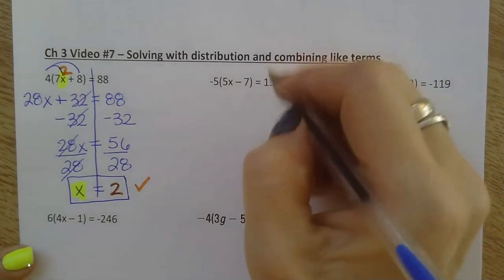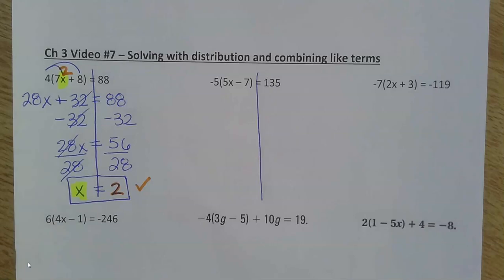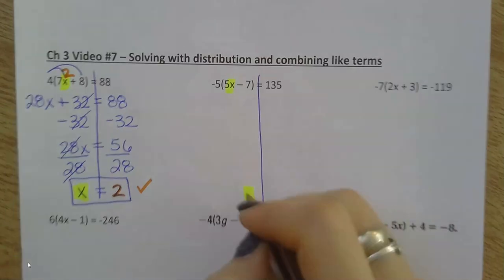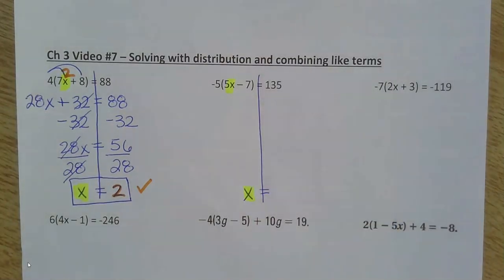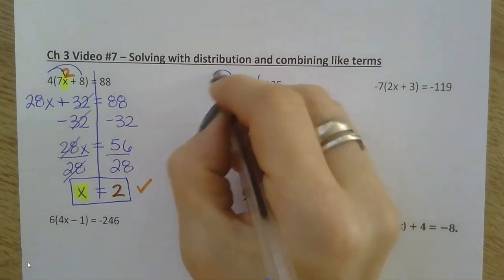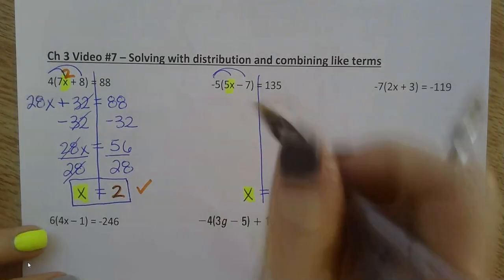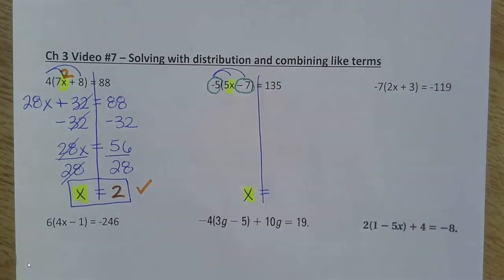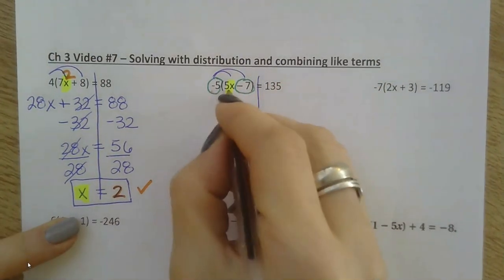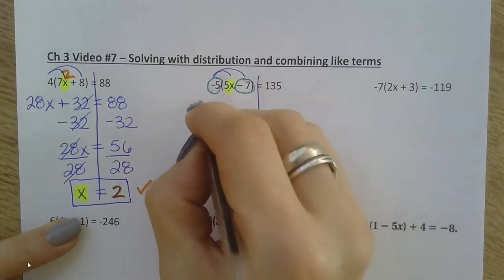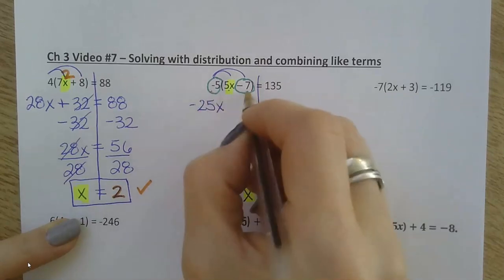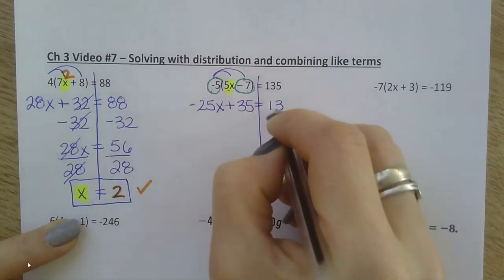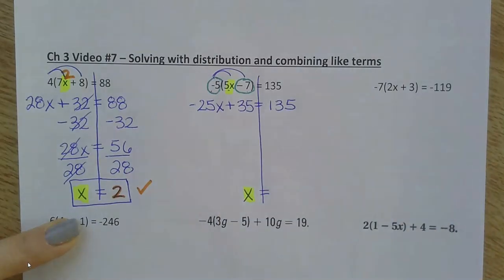All right. Last one I'm going to do. Draw the line down the equal sign. Highlight my variable. Trying to get x by itself. All right. I do see that I need to distribute here. Paying attention to the fact that this is a negative 5. And this is a negative 7. Okay. Negative 5 times 5x. Negative 5 times negative 7 is positive 35.